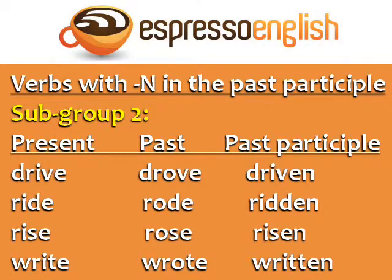Subgroup two has O in the past but not in the past participle: Drive, drove, driven. Ride, rode, ridden. Rise, rose, risen. Write, wrote, written. Notice that the sound of the I changes from the present to the past participle — the present is 'drive' and the past participle is not 'drivin'' but 'driven.'